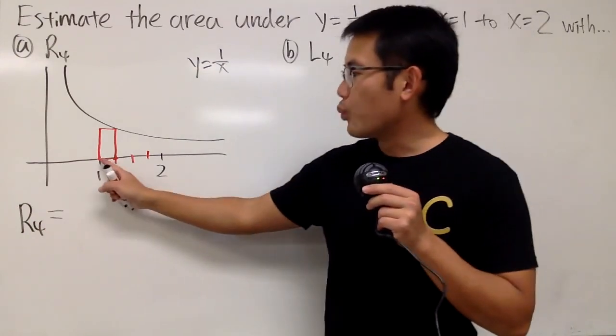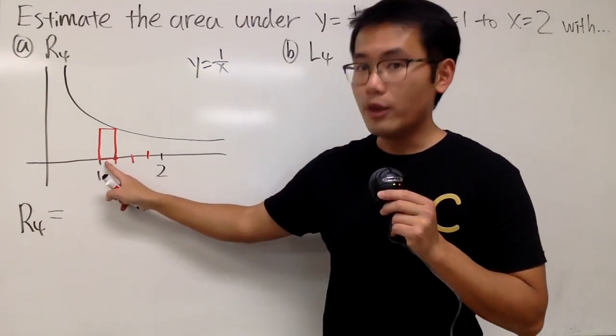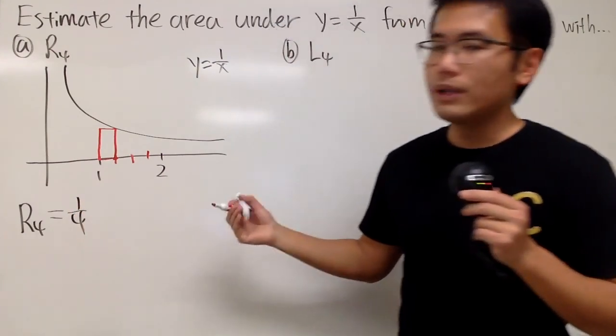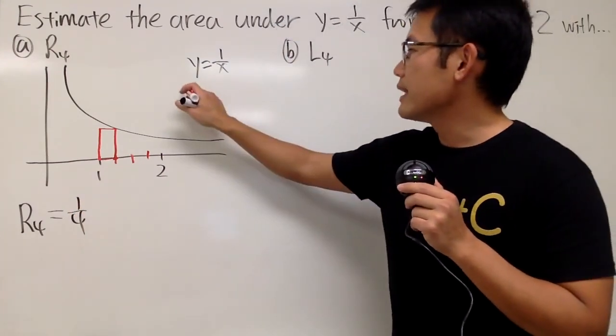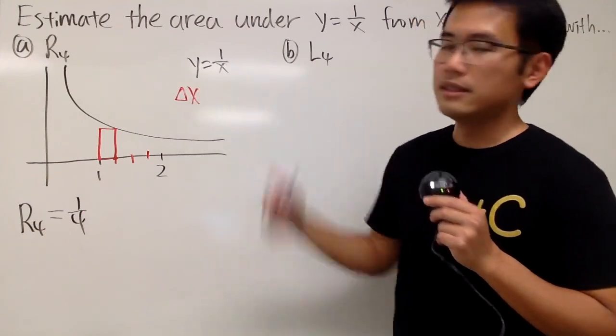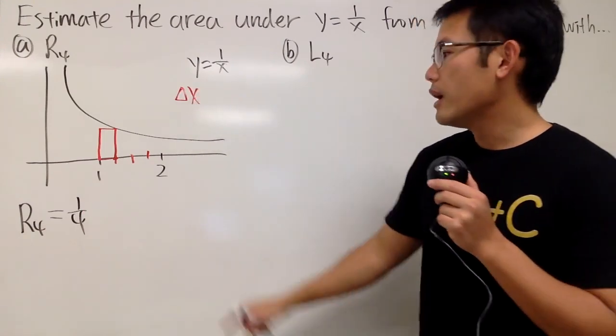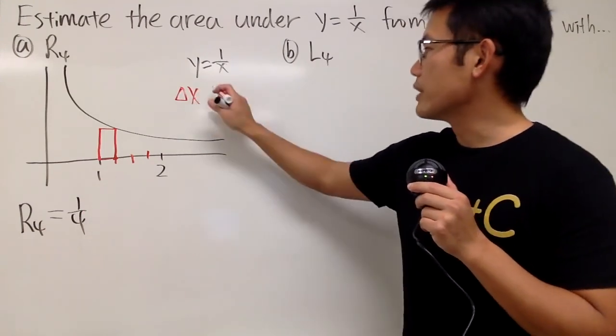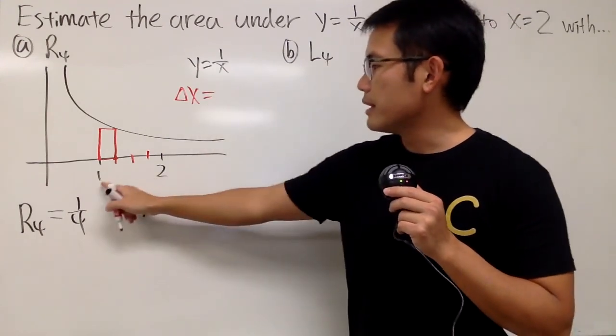First of all, the width of this rectangle is just 1 over 4. And if you would like, you can also use the formula. That's the delta x. Again, this is just the width of the rectangle. And you see we are going from 1 to 2, so that means we do the bigger number minus the smaller number.